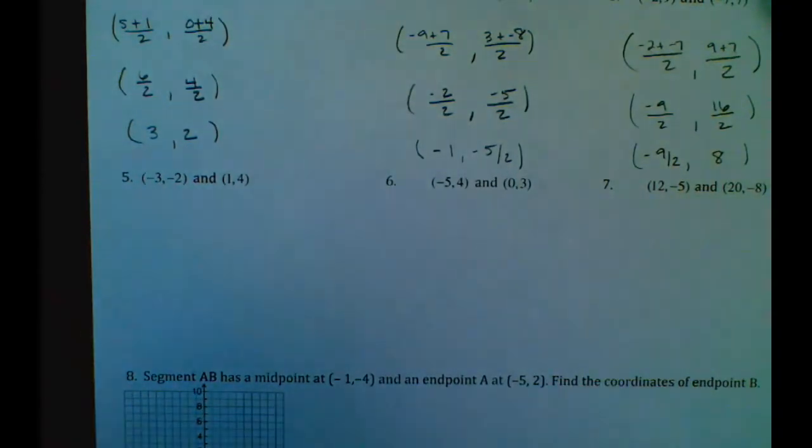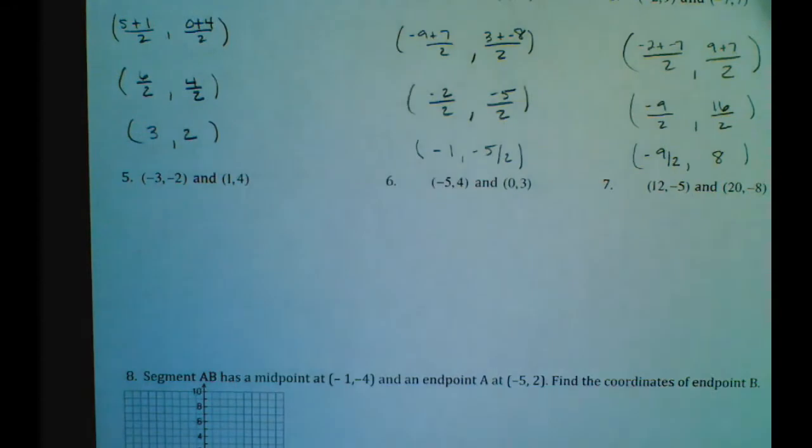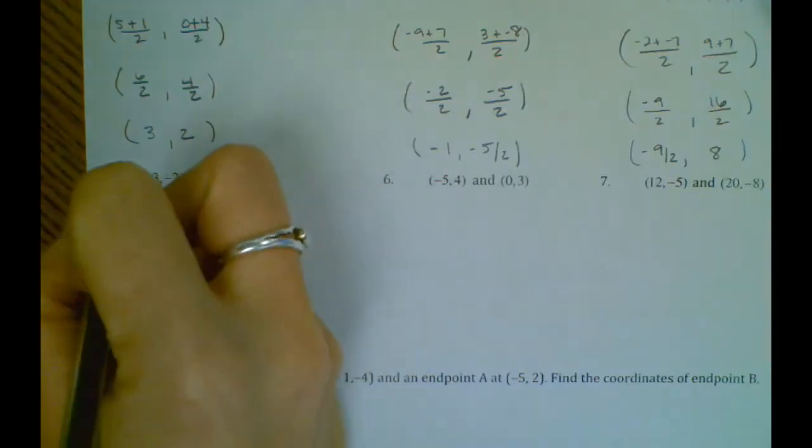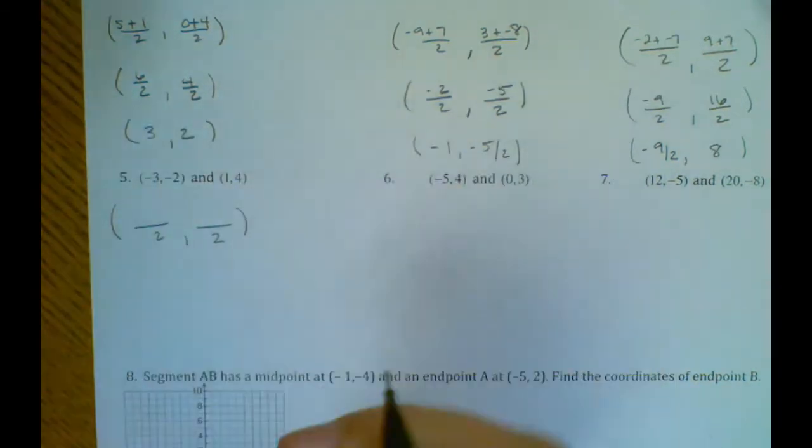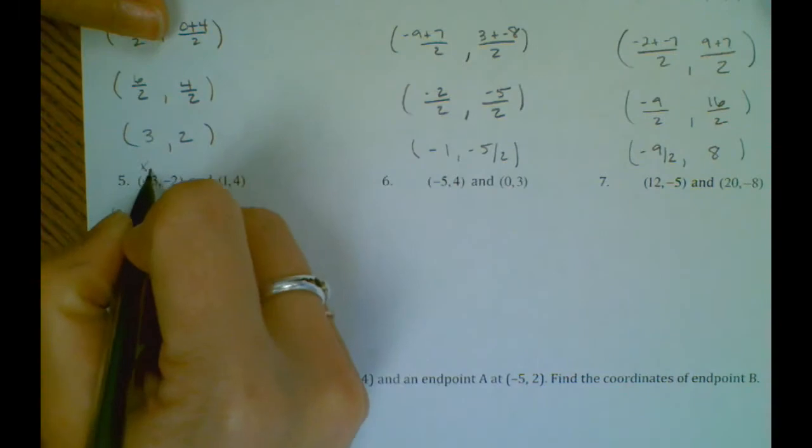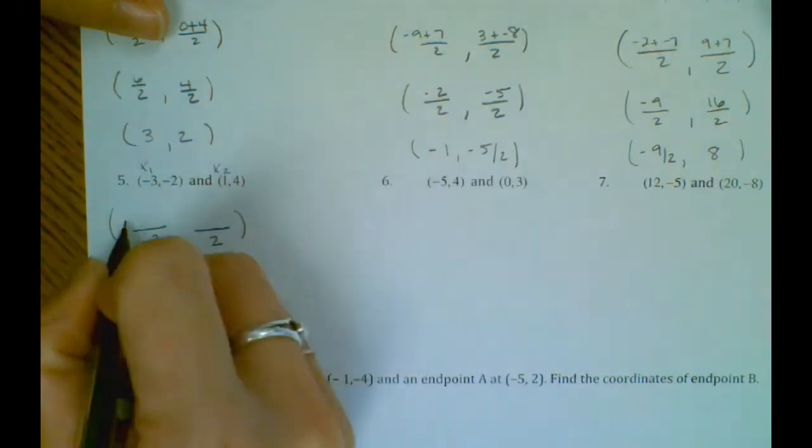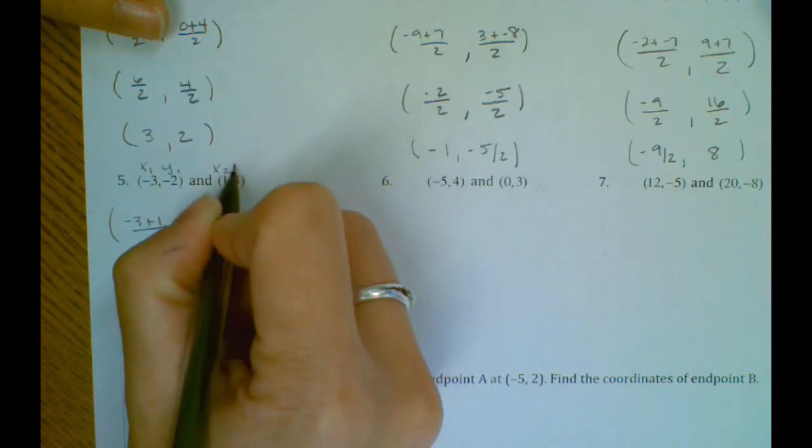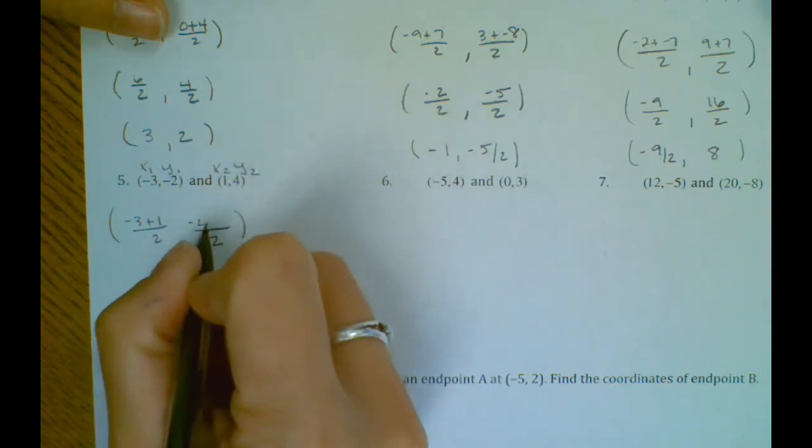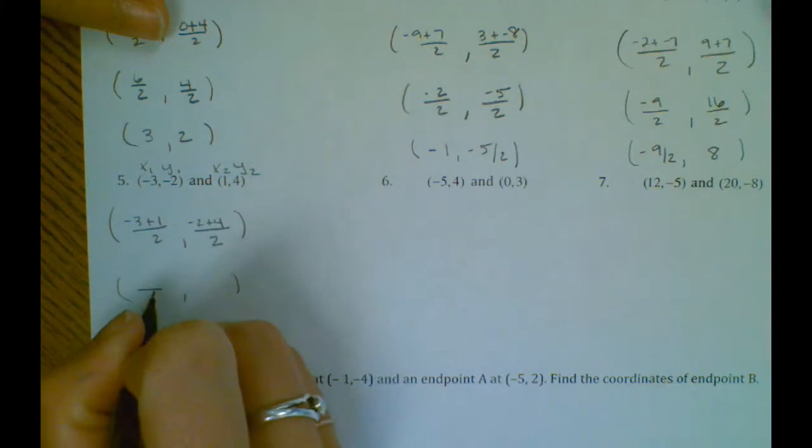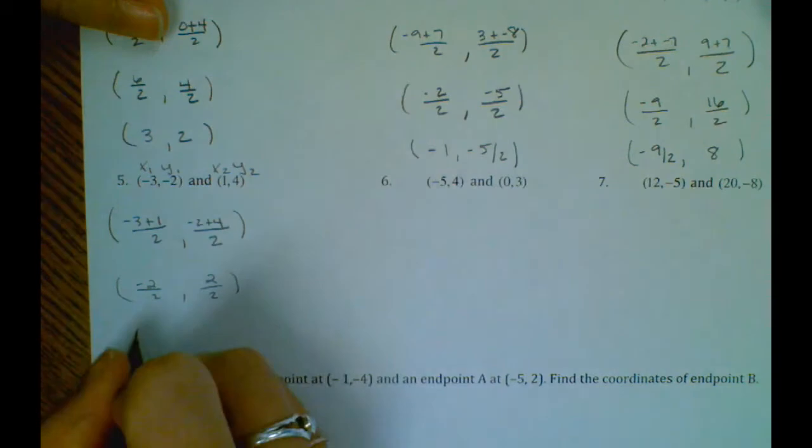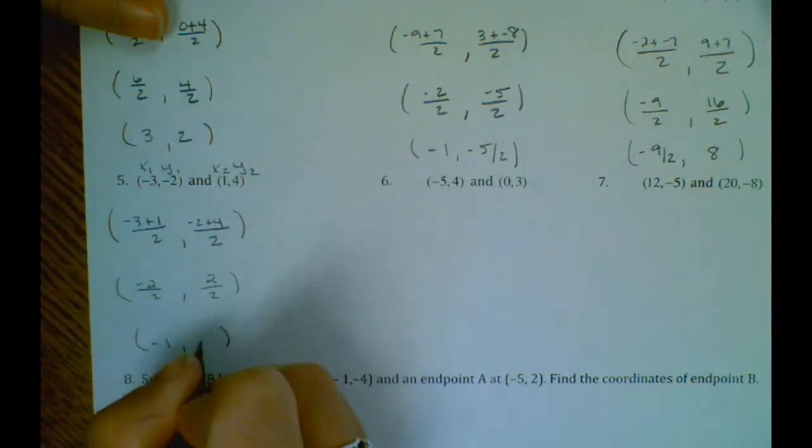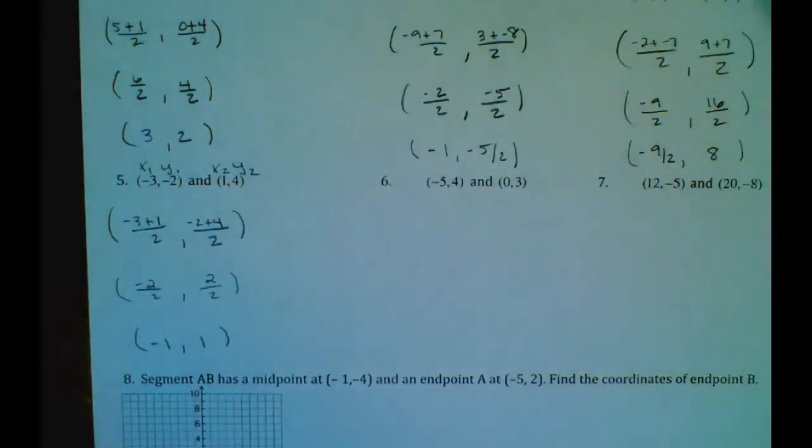Okay, your problem number five for our 3.2 practice. We're using the midpoint formula, so we have x1 plus x2 and y1 plus y2. We'll simplify the numerators. Then negative 2 over 2 is negative 1, and 2 over 2 is positive 1.